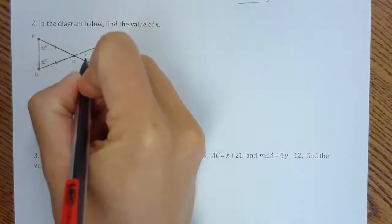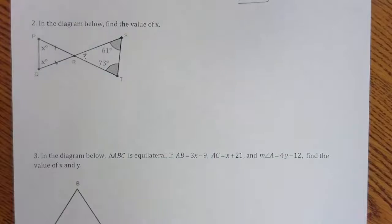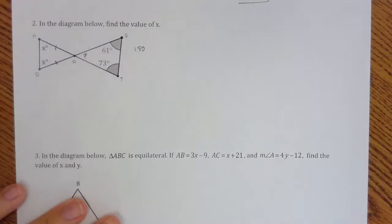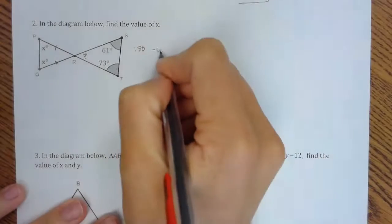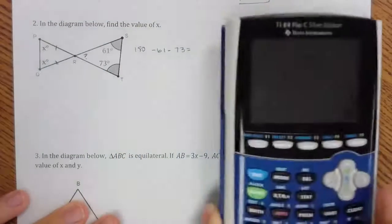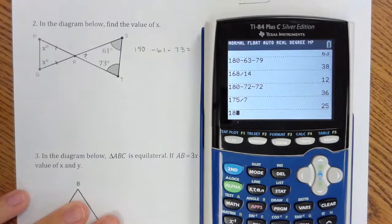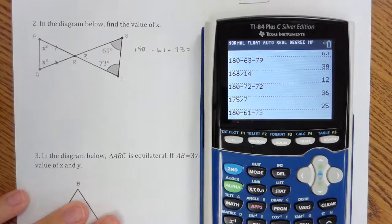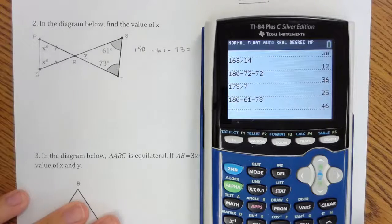So let's go ahead and see if we can find this angle right here. To do that, we know a triangle adds to 180. So we would do 180 minus 61 minus 73, which gives me 46.